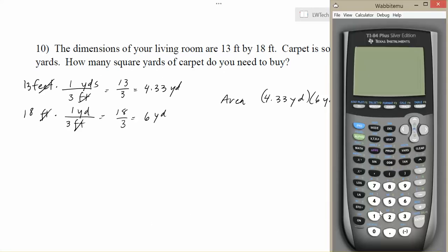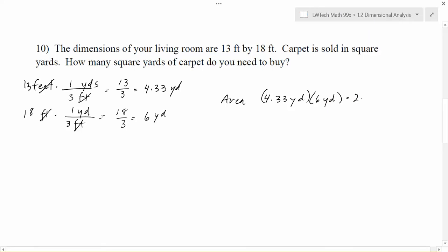I'll grab the calculator here real quick. 4.33 times 6 gives me 25.98. And that will be in square yards. And sometimes you'll see it written like this. Sometimes you'll see it written out as square yards like it is in the problem. Any of those things is fine.